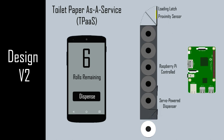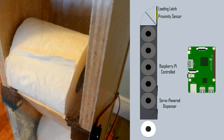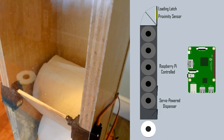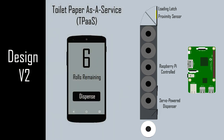This design was then modified slightly to address concerns that the platforms would not retract in time to dispense only a single roll. To get around this, the servo platforms were designed to be stacked on top of each other, with the top one holding the rolls in place, giving the bottom platform adequate time to retract. Additionally, the proximity sensor was moved to the top of the door, facing down to obtain a constant reading of roll capacity based on measuring the distance to the closest roll.